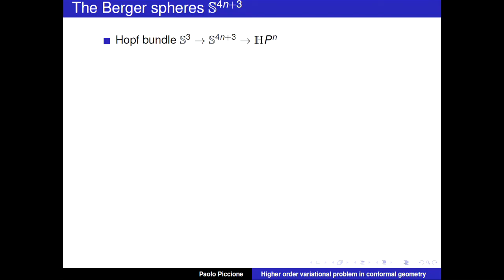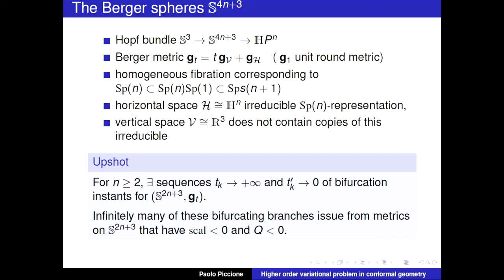A similar situation occurs for other Hopf bundles. In that case we find two sequences of bifurcation instances — one going to plus infinity and one going to 0 — giving examples of multiple solutions in conformal classes satisfying two key inequalities. This is exactly what we were after.